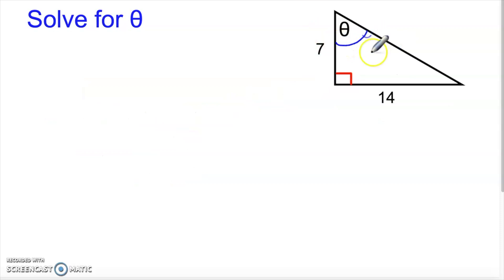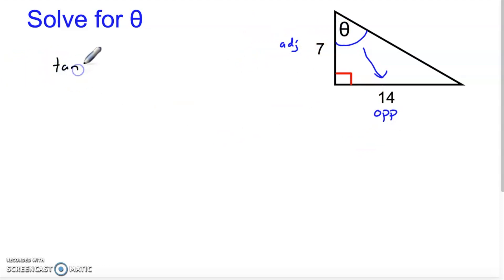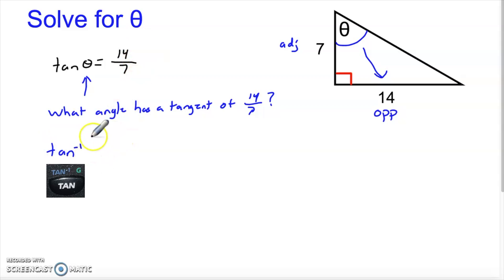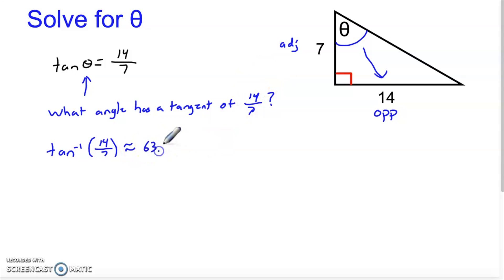Here we've got theta up here on the triangle again. Across from it is the opposite side, and we have the adjacent side but not the hypotenuse. Opposite and adjacent means tangent: the tangent of theta is 14 over 7. But I want to know what theta is, so I ask the calculator what angle has a tangent of 14 over 7. Hit the second button first to pull up inverse tangent, type in inverse tangent of 14 over 7, and the calculator gives approximately 63.435 degrees.